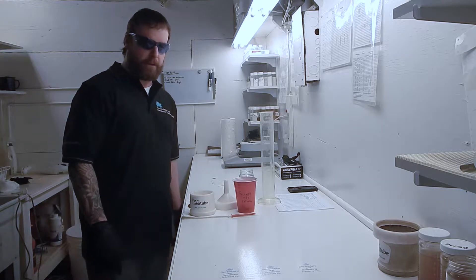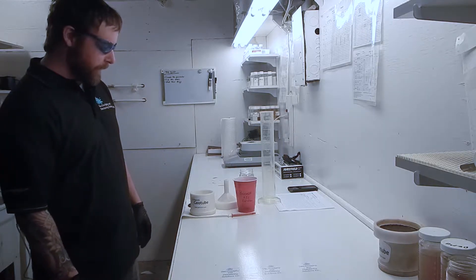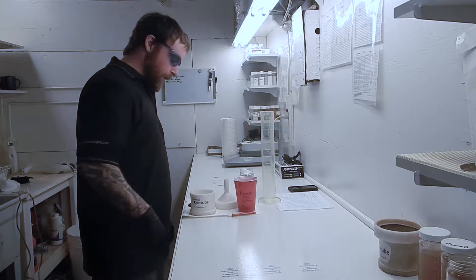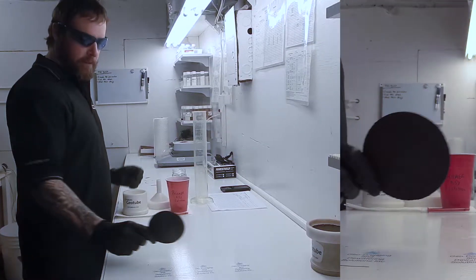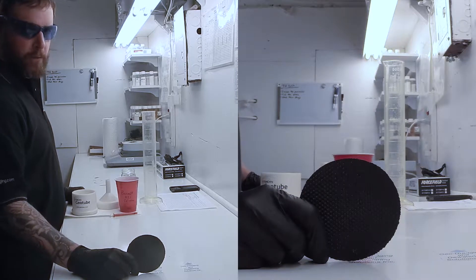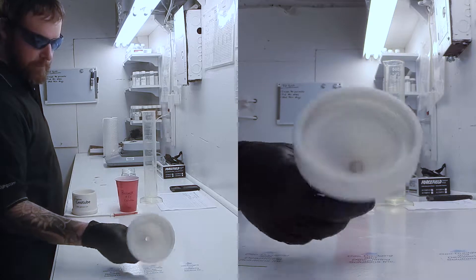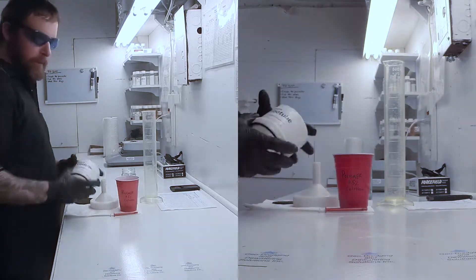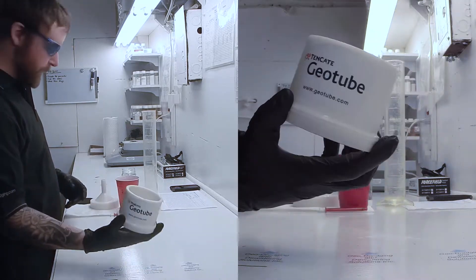In order to perform the RDT you need a few things. First off, you'll need an RDT which is composed of a GT500 disc, which is the same material that our geotubes are constructed of, the funnel, and a cylinder to hold the material.